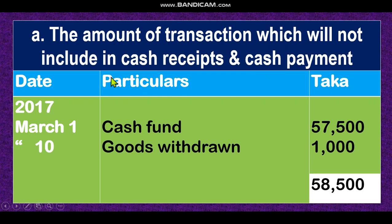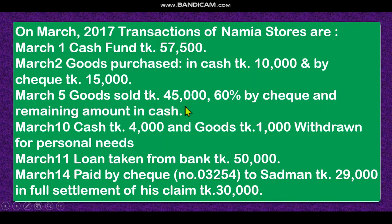The transactions not included in cash receipt or cash payment journal: first write the date, then the particulars, then the amount. Cash fund — this is the opening cash fund, not a receipt or payment, so it will not be recorded. Goods sold in cash — cash 4000 will be recorded in cash payment journal, but goods 1000 withdrawn by the owner does not change cash, so goods withdrawn will not be recorded.